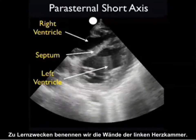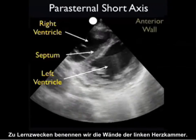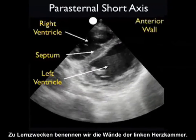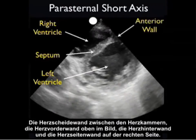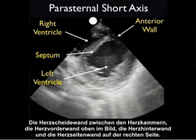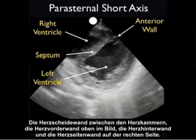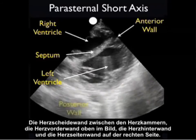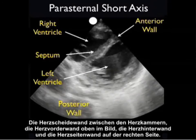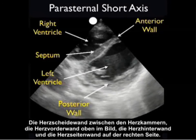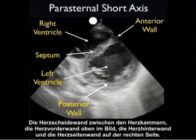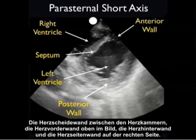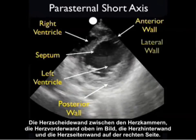For learning purposes we'll identify the walls of the LV: the septum in between the ventricles, the anterior wall to the top of the screen, the posterior wall to the back, and the lateral wall as shown towards the right portion of the screen.